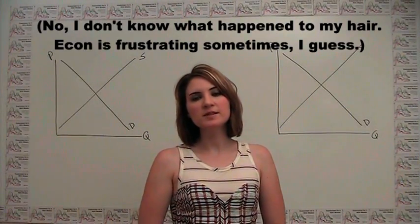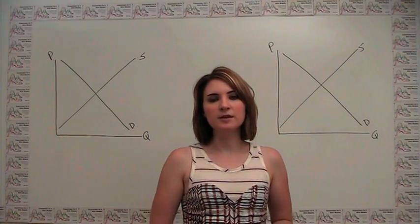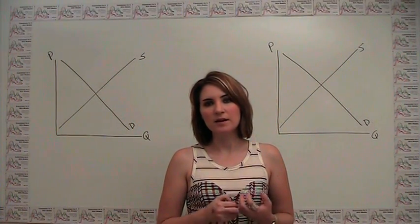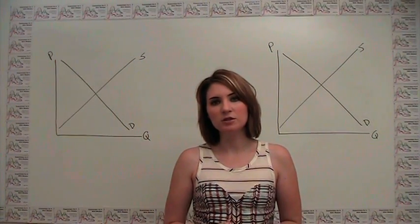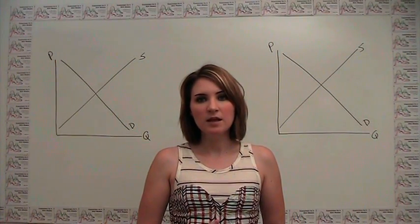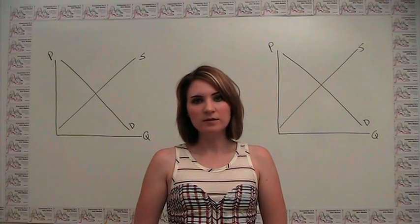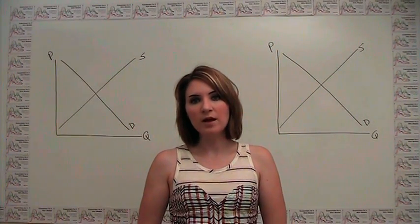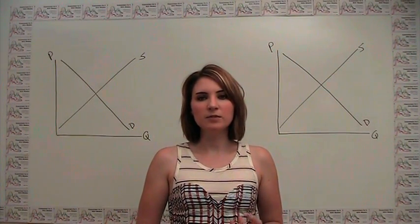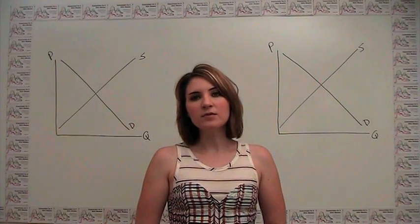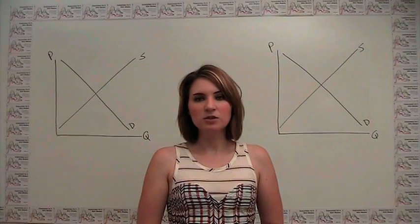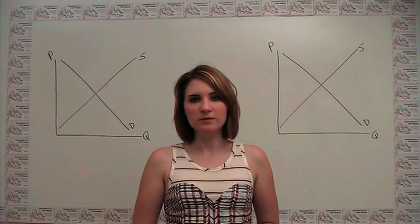In the next video, we'll introduce the demand curve and we'll talk about the different factors that influence an individual or a market's demand, that being how much of a particular good or service they want to purchase. Then we'll go on to talk about supply and the determinants of supply and understand how much of a particular good or service is going to be produced in that market. Finally, we'll put the two of those together and show how a market equilibrium is reached.